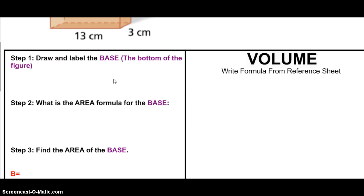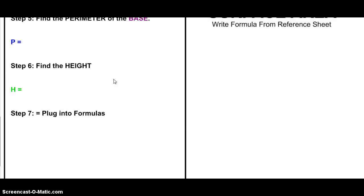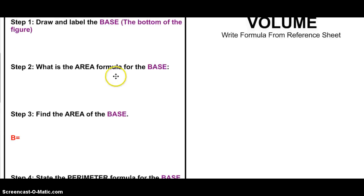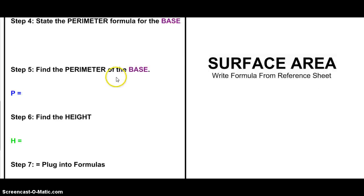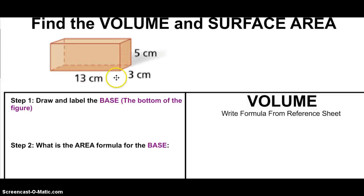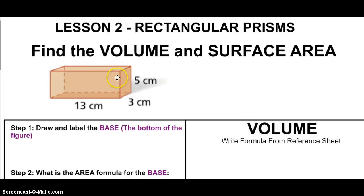All you have to do is follow the steps on the left-hand side every time, and you'll be able to find the volume and surface area. Just follow these steps along with us. So what we're trying to do is find the volume and surface area of a rectangular prism. To do that, I'm going to start with step one.